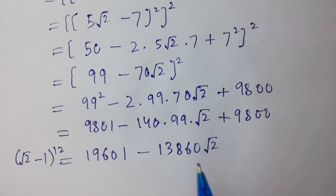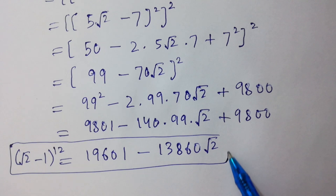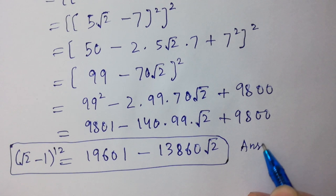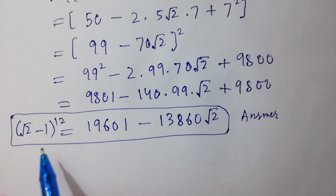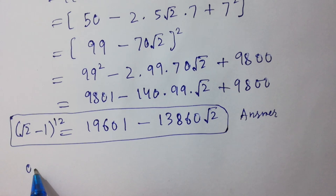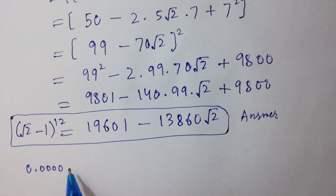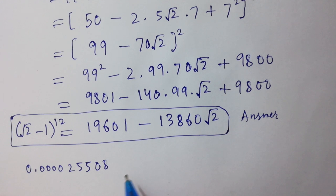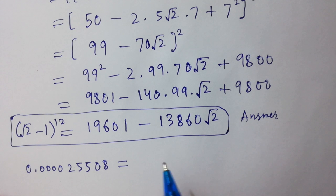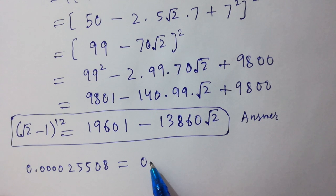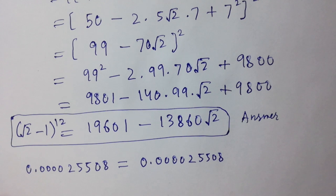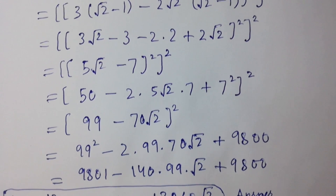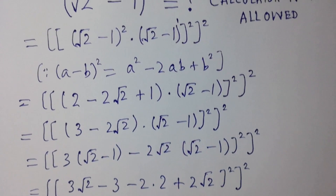That is our correct answer. If I use the calculator — square root of 2 minus 1 to the power 12 — I get 0.40025... And amazingly, if I solve 19601 minus 13860 square root of 2, I get the same answer: 0.40025. Thanks for watching this video. Please subscribe to this channel to get notifications of my new videos. Okay, bye.